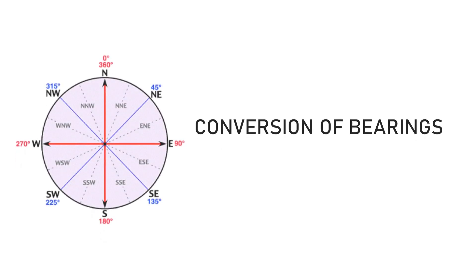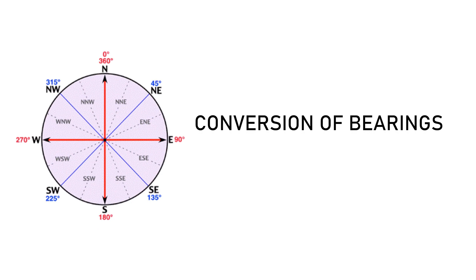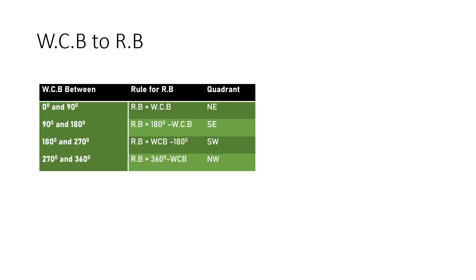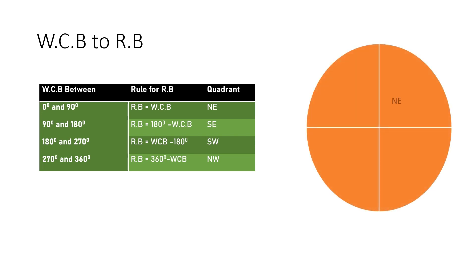Now let's learn the conversions of bearings from one system to the other. Bearings of a line can be available in either WCB or QB system; based on convenience, one system can be converted to another either by drawing the directions or by following the simple rules given in the conversion table. This table shows how the WCB of a line can be converted to a corresponding reduced bearing or QB system, providing the corresponding RB value and the quadrant in which it falls.